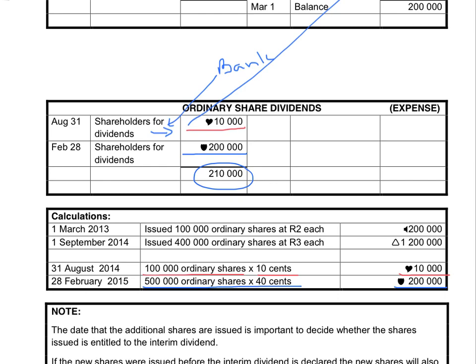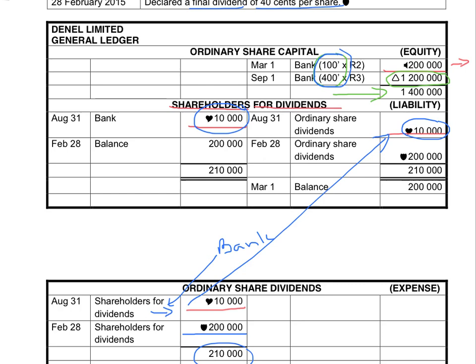The final dividend is debited to increase the expense. We owe the money to the shareholders, so we credit shareholders for dividends with R200,000 to show that the total amount outstanding at the end of the year is R200,000. The total amount to be paid to shareholders for the year is R210,000 — we already paid R10,000 interim — so the outstanding balance to be paid at the beginning of the following year is R200,000. This is very important for cash flow statements: if they give you this closing balance of R200,000, it indicates that is the final dividend declared.